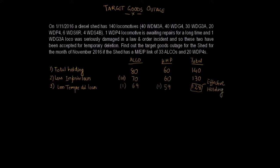In the next step we will reduce the effective holding by heavy schedule allowance. For ALCO locomotives this allowance is 10%, and for HHP locomotives this allowance is 5%. So 10% of 69 is 6.9; reducing 69 by 6.9 we get 62.1. Similarly for HHP locomotives, 5% of 59 is 2.95; reducing 59 by 2.95 we get 56.05. The sum of 62.1 and 56.05 is 118.15.